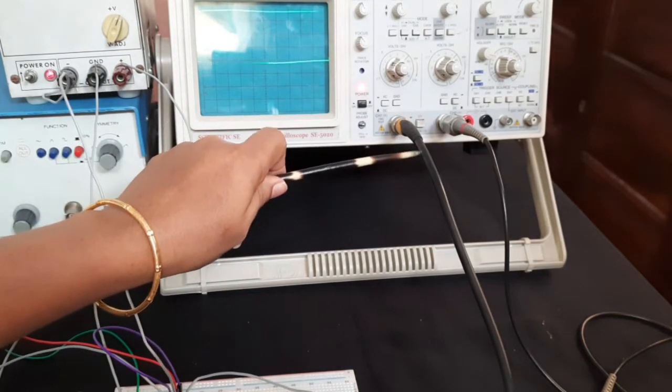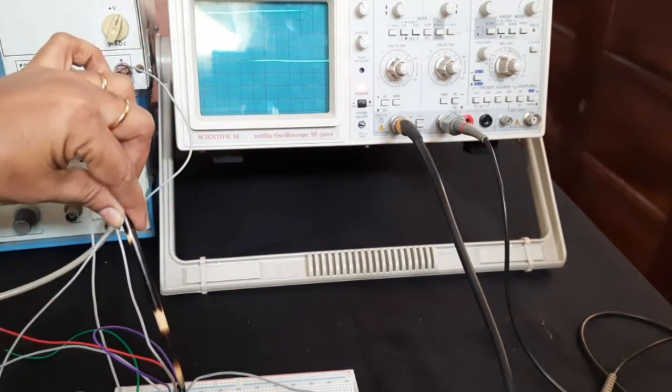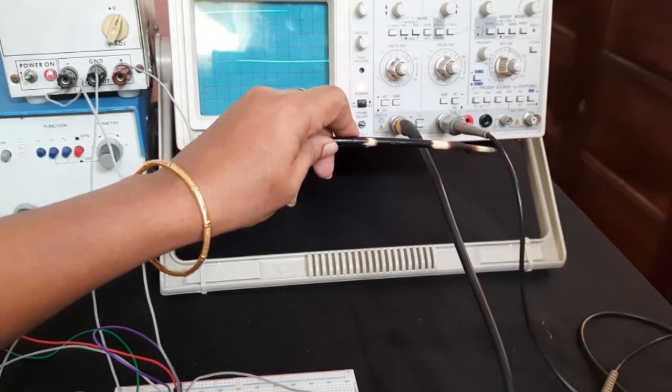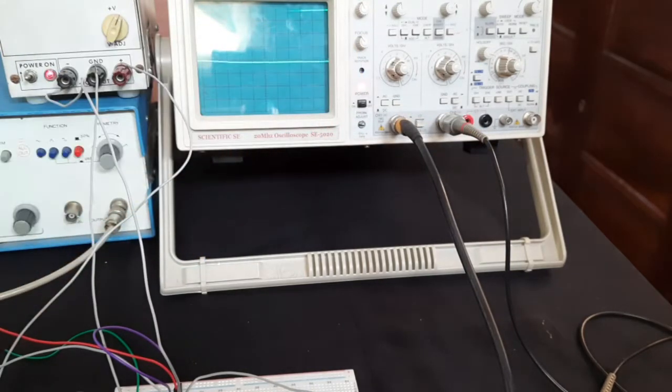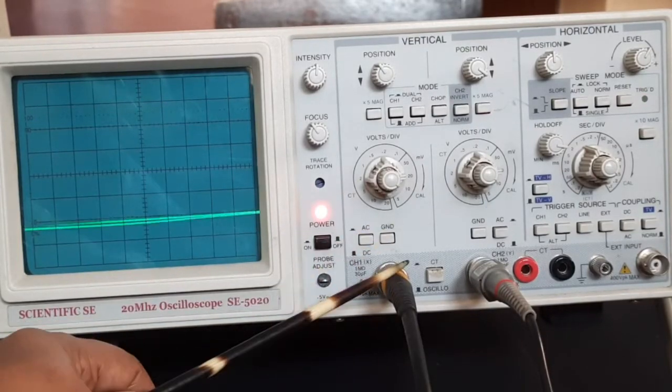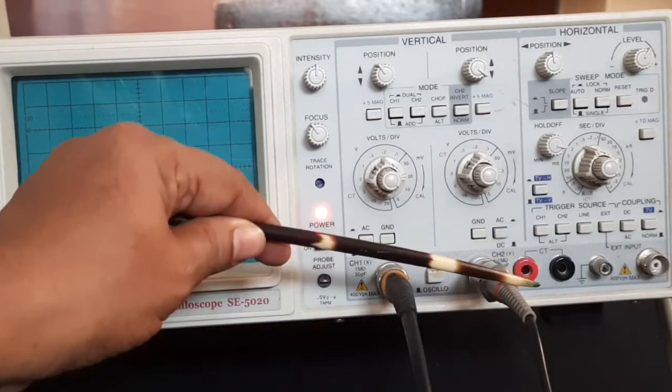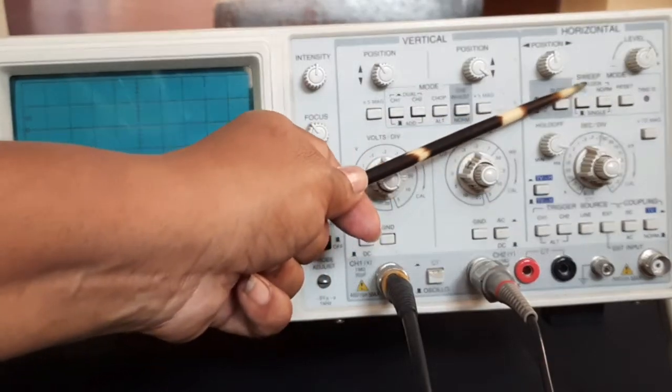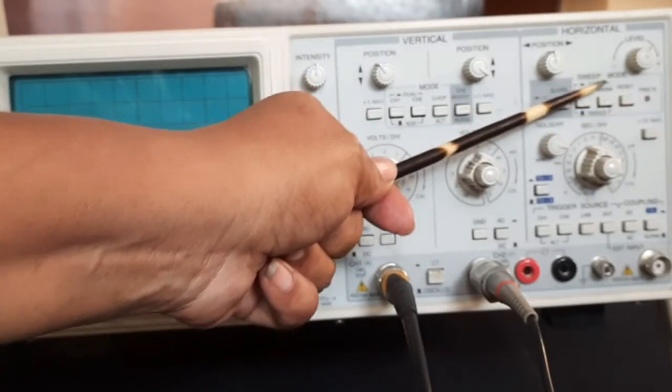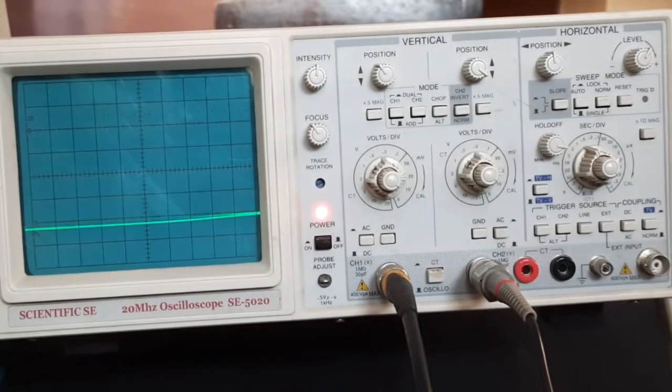We will connect channel 1 of the CRO to the same point as that of the input in the breadboard, and this is the output channel, channel 2 to pin 6. Coming to the CRO, this is the input channel 1, this is the output channel 2. Set it so that the sweep mode is lock position with auto and norm pressed together.